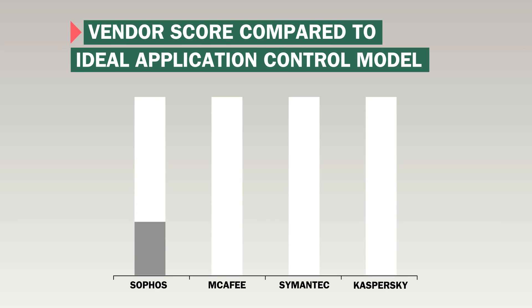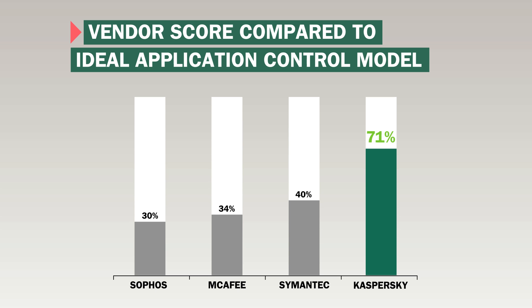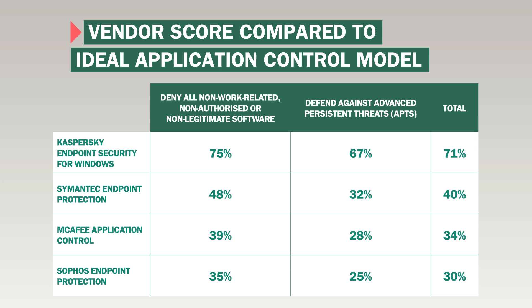Kaspersky Lab's endpoint software came top of the four products tested. It did particularly well in two parts of the test. First, it produced really thorough logs — these should not be underestimated, as good logs are really important to detect what users are doing, both in terms of legitimate software and any threats that have made it onto the network. It was also very good at handling vulnerable applications — it could detect vulnerable applications running on the network, restrict them from doing things they shouldn't, and more interestingly, allow them to be updated to a more secure position. So an old piece of software is blocked until it's updated, the vulnerability is patched, and users can use it safely. Taking control of vulnerable software is very important because it's often the route attackers use to gain a foothold on a network and compromise or steal data.